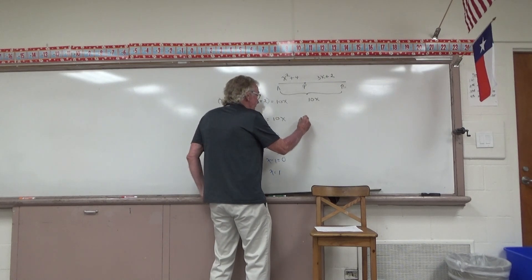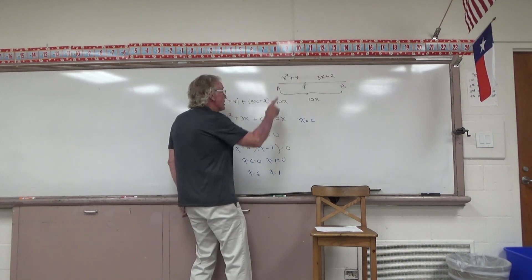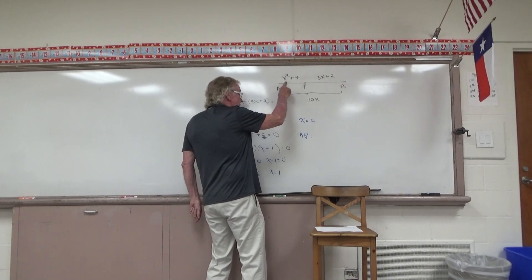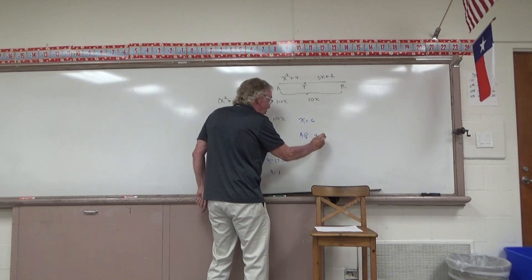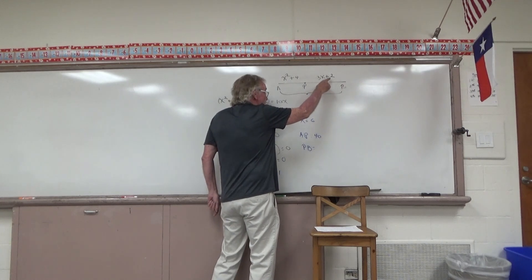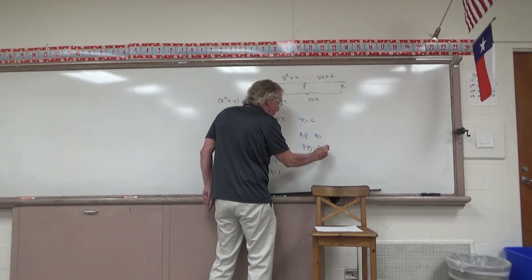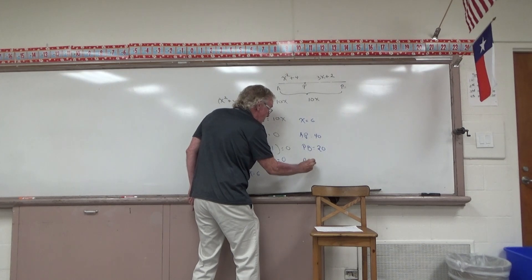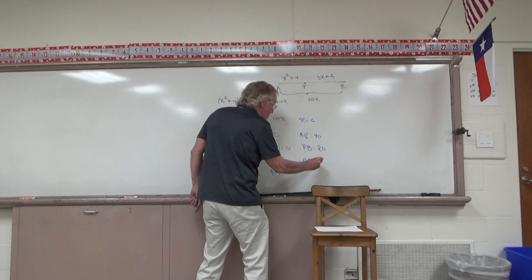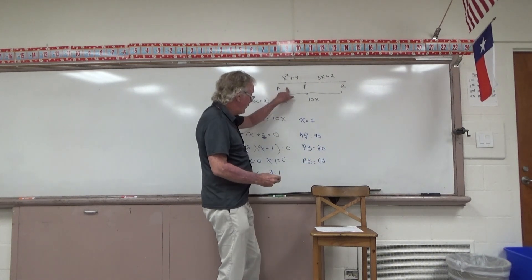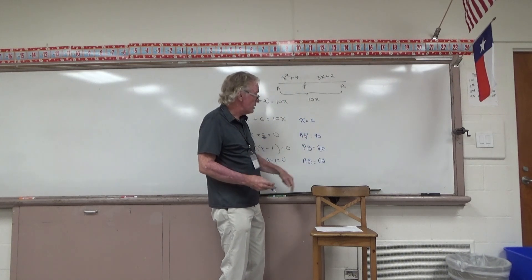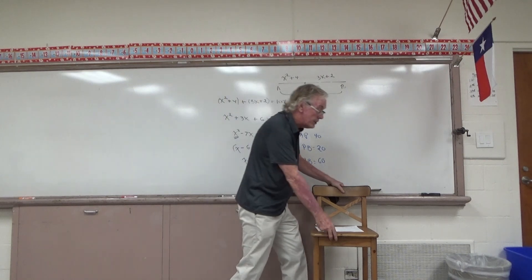Let's work with this one, X equal to 6. If X were truly 6, then what would AP have been? 6 squared is 36, plus 4 would be 40. And PB? 3 times 6 is 18, plus 2 would be 20. And AB? If X is 6, then AB is 10X, 10 times 6 would be 60. And I'm happy with that. A length of 40, a length of 20, and a length of 60. It's not drawn to scale, but that's okay with me. They add up correctly. X equal to 6 is a valid root. But let's look further.